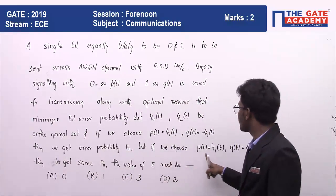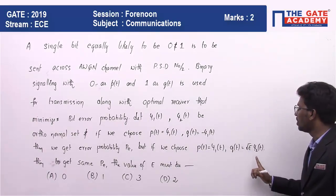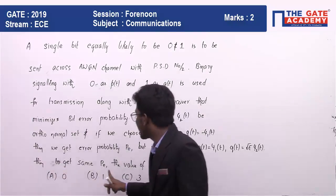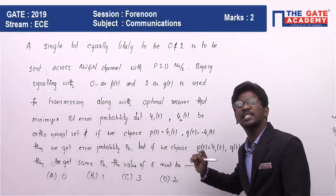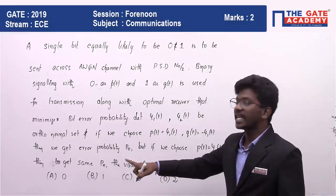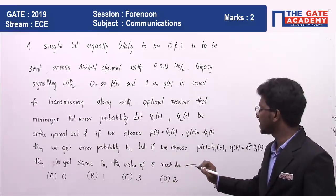But if we choose P(t) equal to ψ1(t) and Q(t) equal to square root of E into ψ2(t), then to get the same Pₓₑ, the value of E must be what? The options given are: (a) 0, (b) 1, (c) 3, and (d) 2.